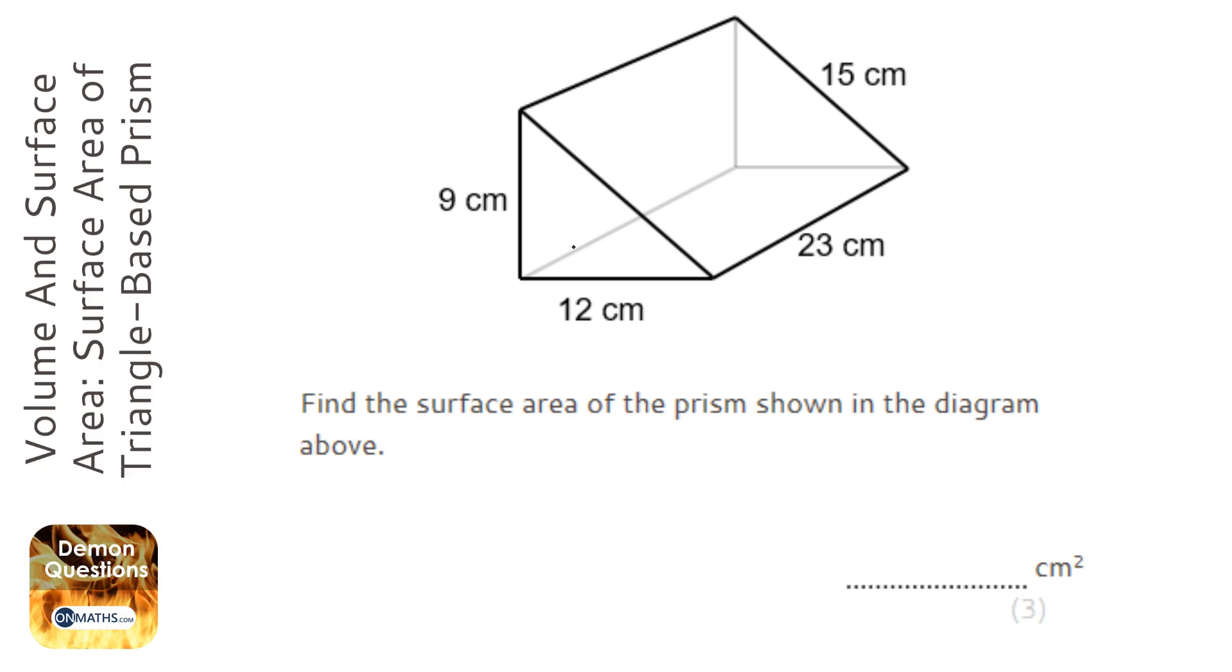We've got a triangle at the front here and the same triangle at the back. Then we've got this rectangle up the side here, which I'm going to call B. Then round the back, we have this rectangle here, which I'm going to call C. And then at the bottom, we've got this rectangle here, which I'm going to call D.